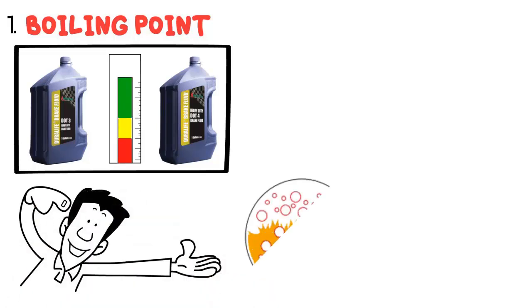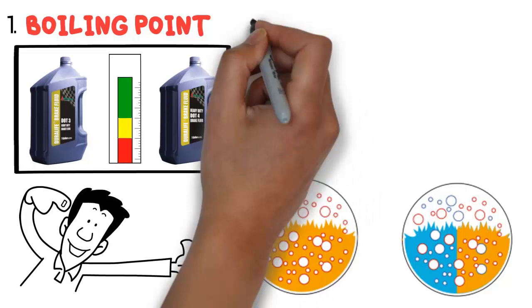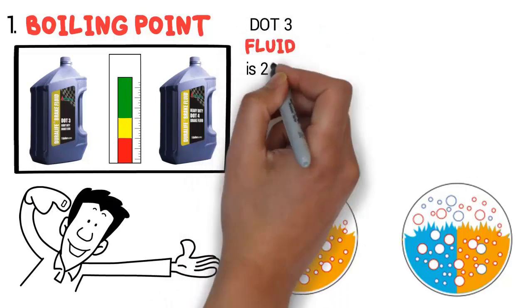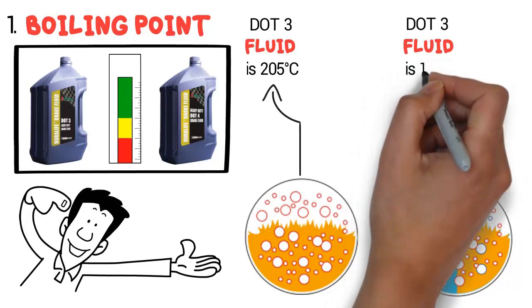Dry boiling point: the specific boiling point without containing water. Wet boiling point: the specific boiling point of the fluid when contaminated with moisture or water. The dry boiling point of DOT 3 fluid is 205 degrees Celsius and its wet boiling point is 140 degrees Celsius.